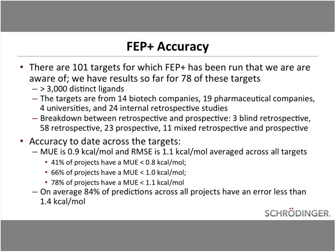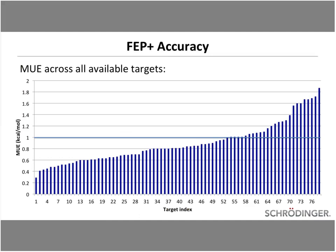The breakdown includes 3 blind retrospective studies, 58 completely retrospective studies, 23 prospective studies, and 11 mixed studies. Across all those targets and project situations, the mean unsigned error and root mean square error agree very well with our earlier published work. On average, 84% of predictions across all projects had errors less than 1.4 kcal/mol — or a log order of binding affinity — and the vast majority of projects had the majority of predictions more accurate than 1 kcal/mol.